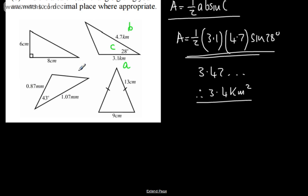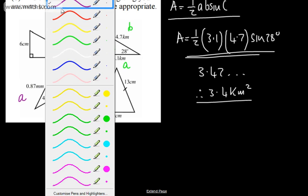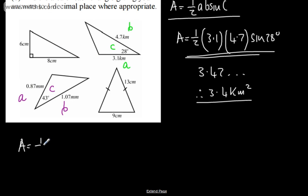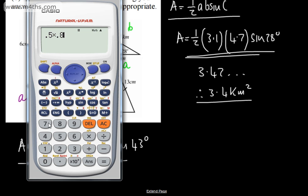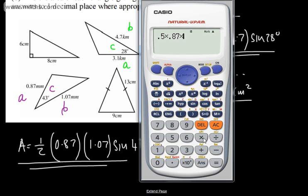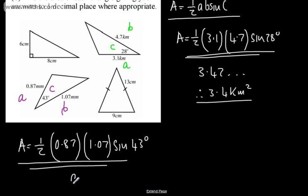This next one also has the enclosed angle and two sides. Calling them C, A, and B, the area equals 0.5 × 0.87 × 1.07 × sine 43°. Do check that both measurements are in the same units. This gives 0.317..., so to one decimal place the area is 0.3 millimeters squared.